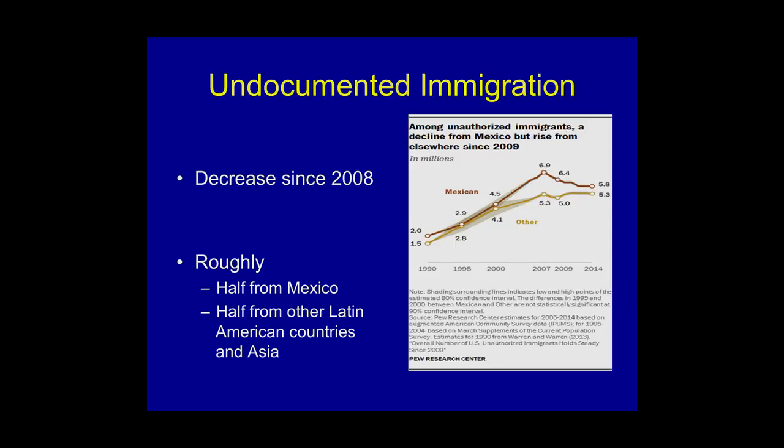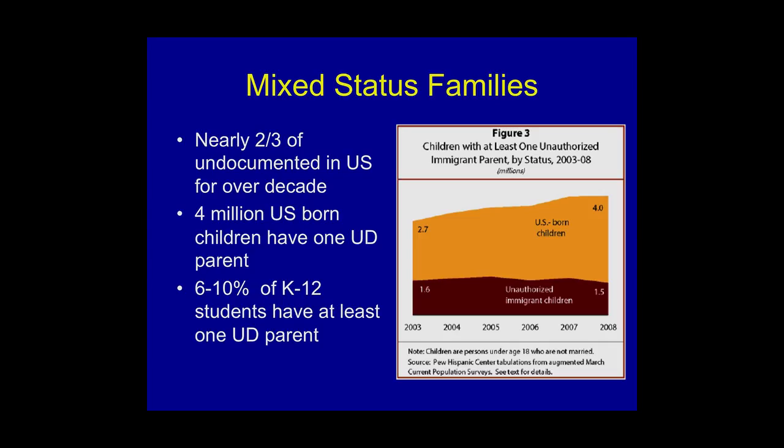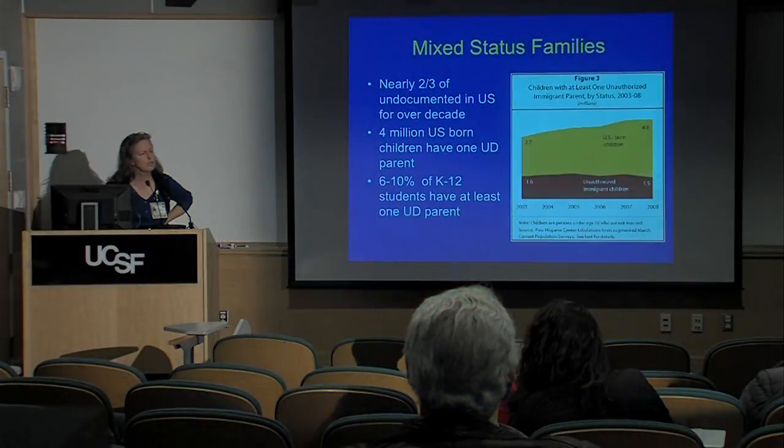Regarding undocumented immigration — that quarter of foreign-born folks who are undocumented — most are from Mexico, and there has been a decrease in those coming now with recent political developments. Most undocumented people are part of mixed-status families. About two-thirds have lived in the US for over a decade, and many US-born children have at least one undocumented parent. These are people who are truly part of their communities.